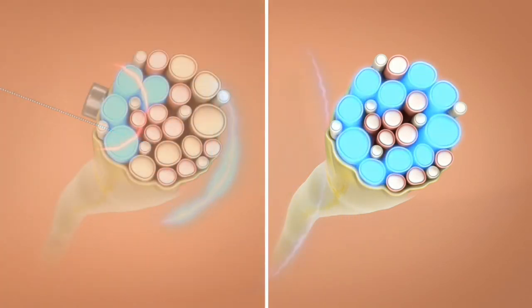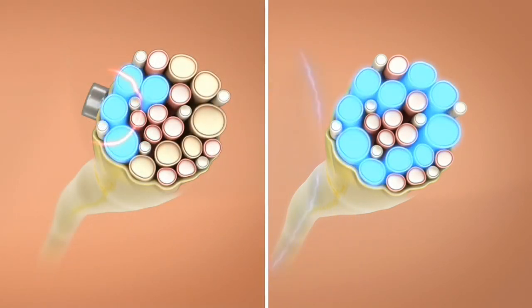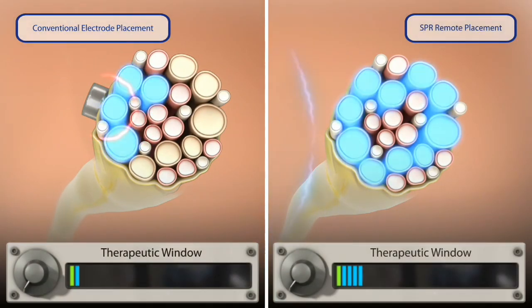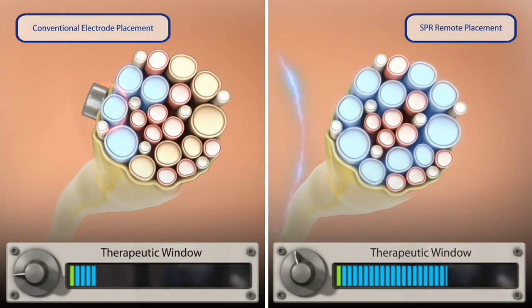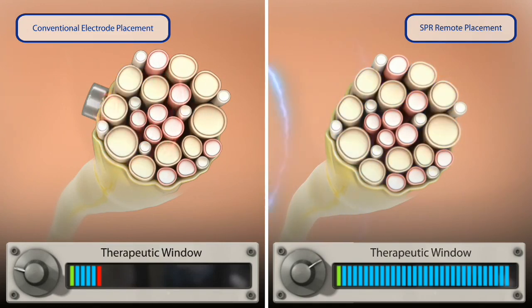The more intimate placement of electrodes relative to the nerve increases the potential to affect unintended fibers resulting in a significantly reduced therapeutic window. The ability to deliver stimulation remote to the nerve enables ease of implantation and the preferential activation of only the desired fibers.